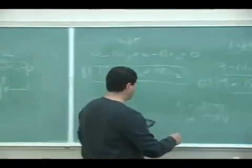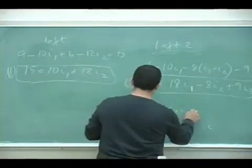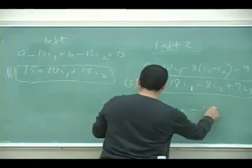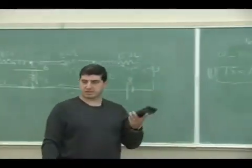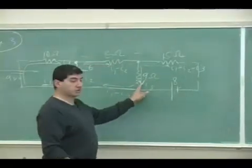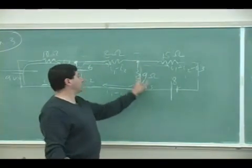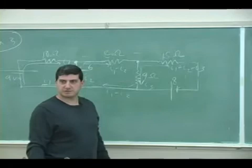And then the i3 gives me negative 0.1636. That's what the answer came out, which is the current through the 9-ohm resistor, which is negative means it's going up, right?